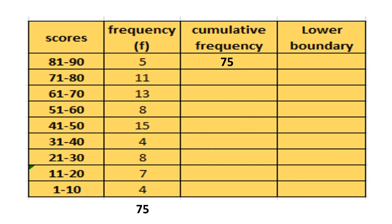Then you subtract going downward by each frequency value. So 75 minus 5 is 70, 70 minus 11 is 59, minus 13 is 46, minus 8 is 38, minus 15 is 23, minus 4 is 19, minus 8 is 11, and 11 minus 7 is 4.